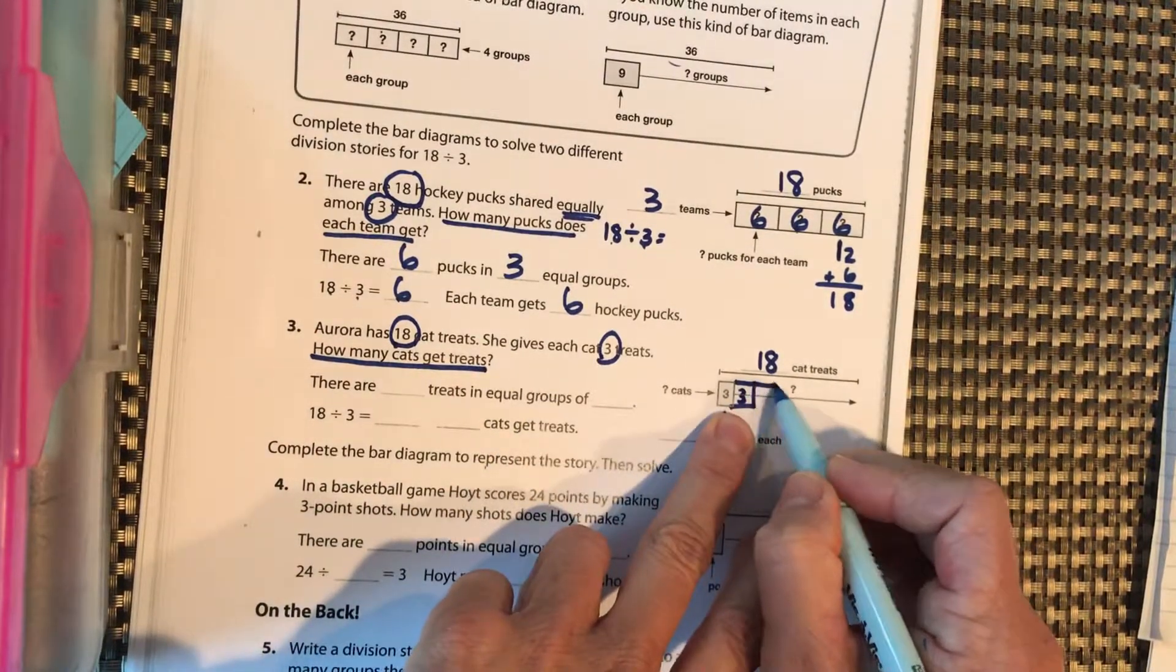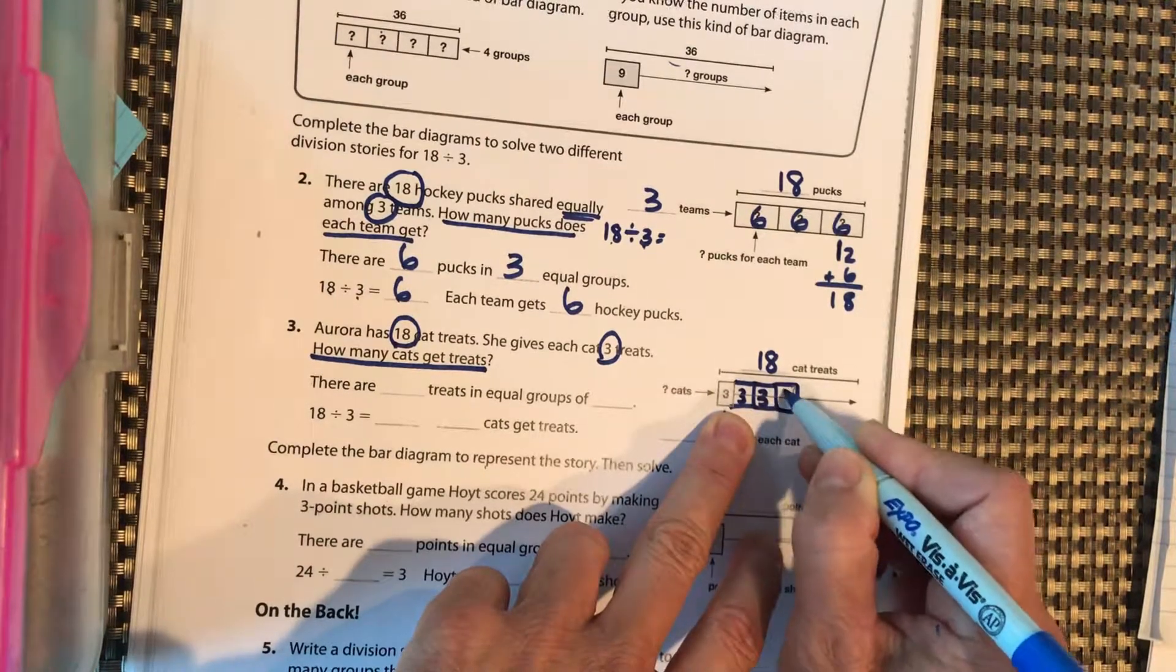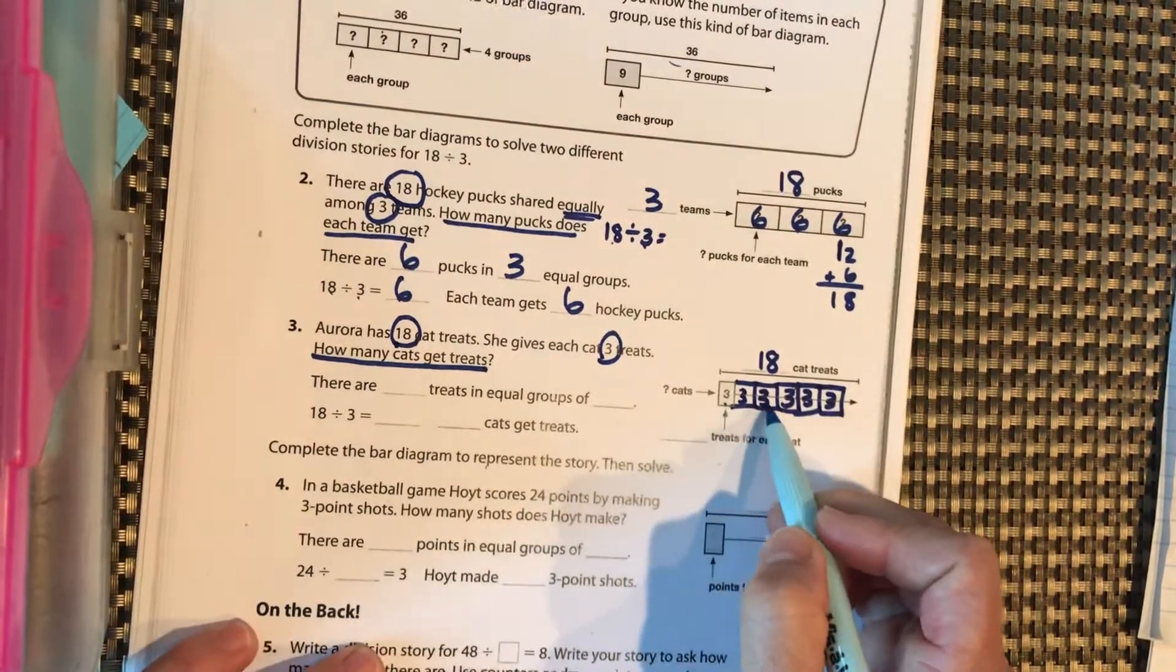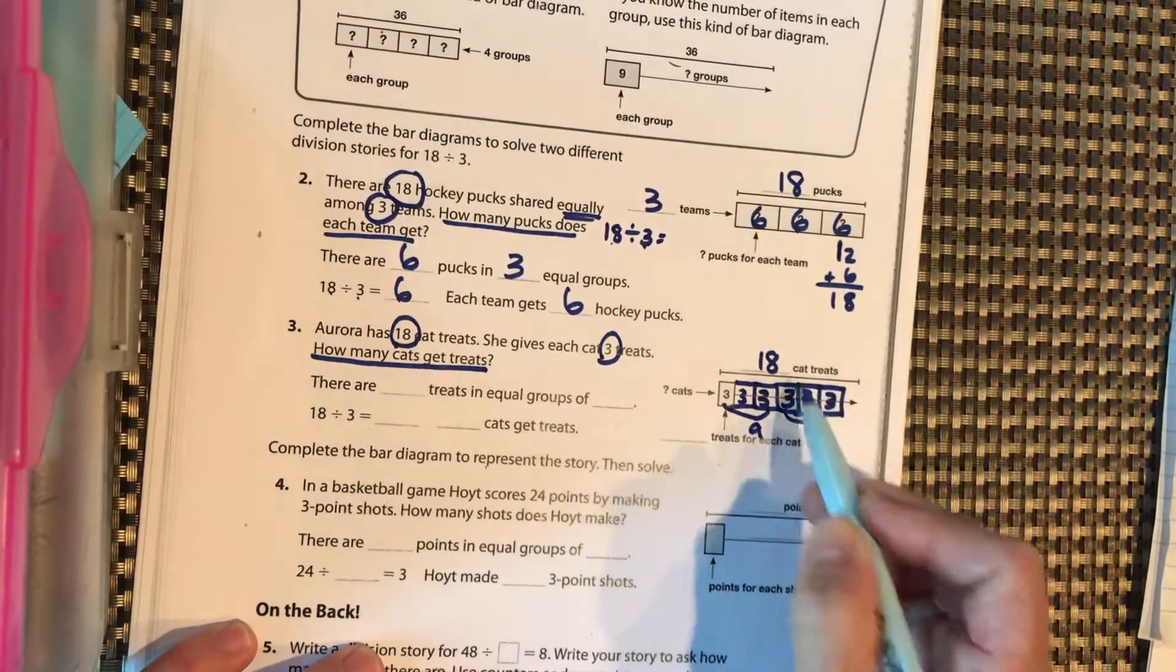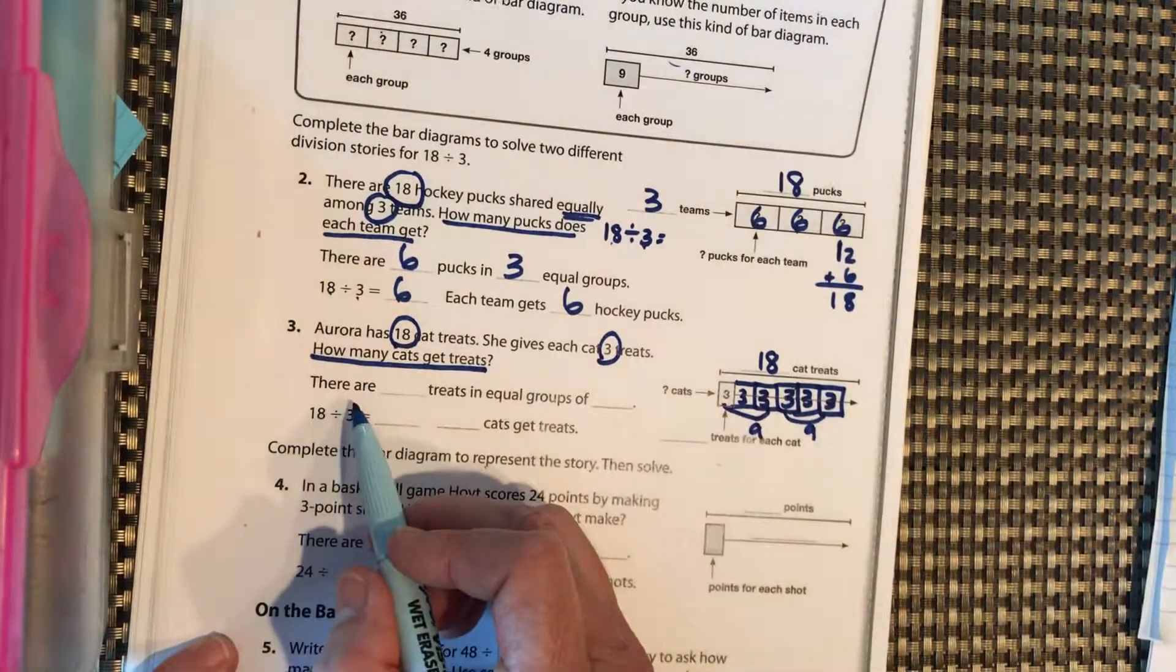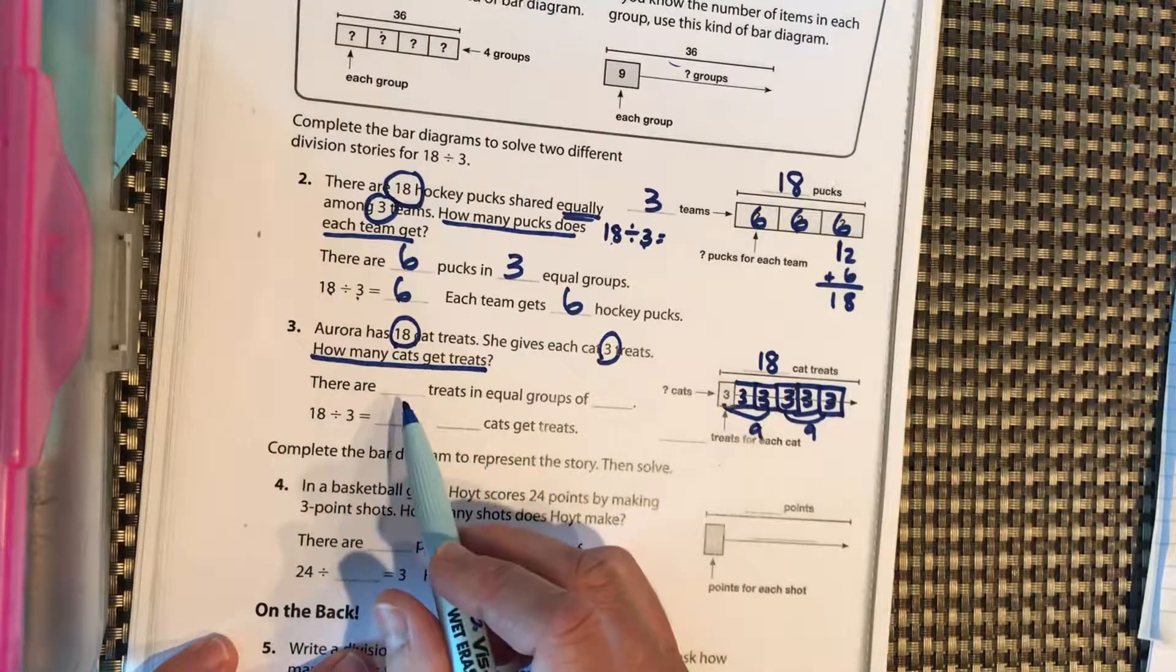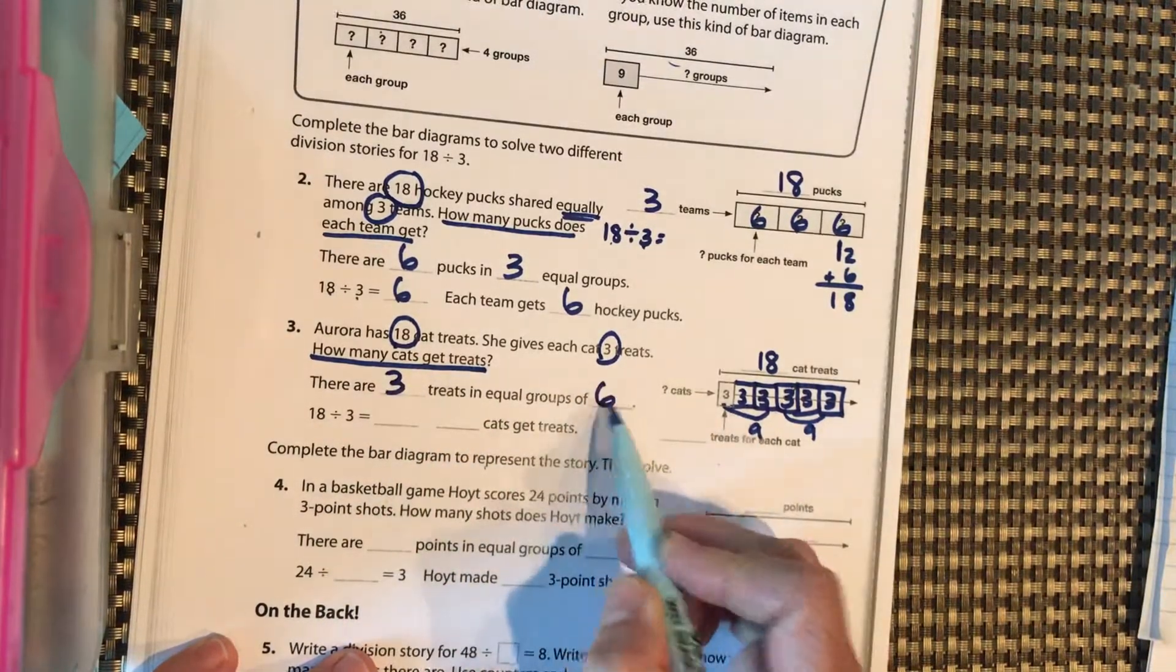Three plus three is six. Nine. Twelve. Fifteen. Eighteen. So if you know that three times three is nine, you could do like that. Nine plus nine is 18.